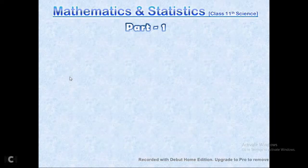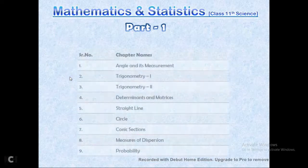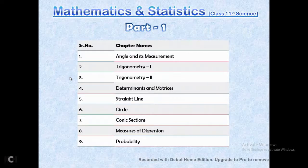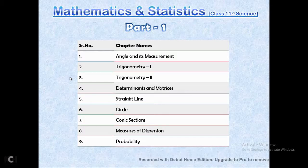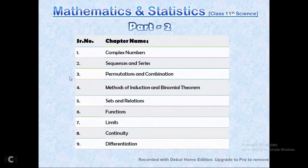For mathematics and statistics for 11th science, Part 1 includes: angle and its measurement, trigonometry parts one and two, determinants and matrices, straight line, circle and conics, measures of dispersion, and probability. Part 2 includes: complex numbers, sequence and series, permutations and combinations — which is very important — induction and binomial theorem, sets and relations, functions, limits, continuity, and differentiation.